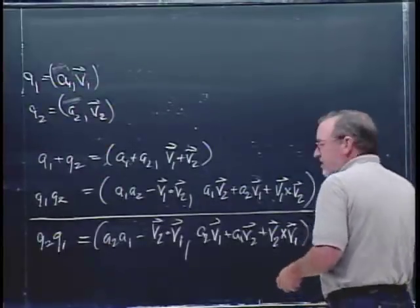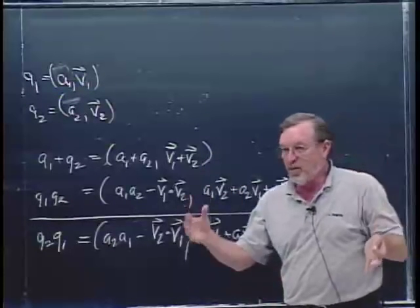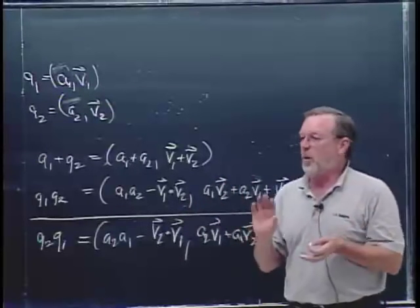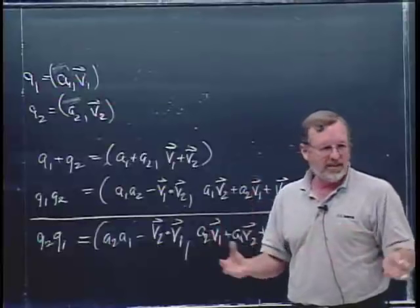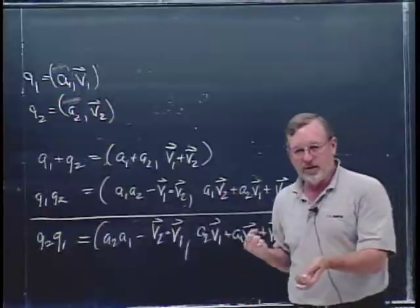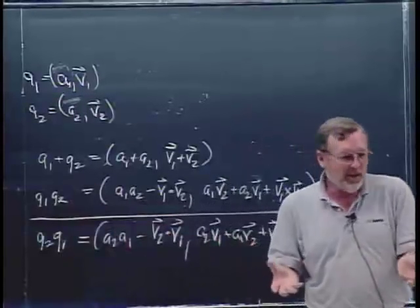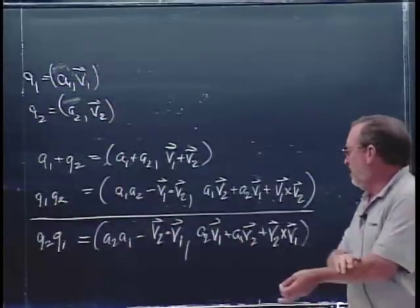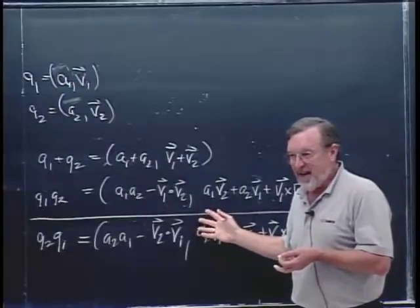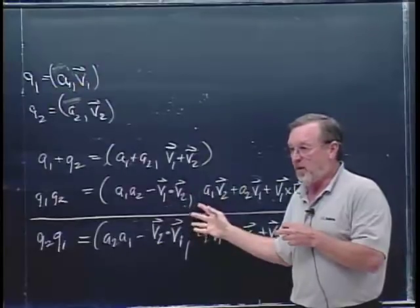Mathematicians love to look at things that look like numbers, act like numbers, do everything else, but one thing's wrong — and then ask what can we say about this? Quaternions pop up as that thing: they have everything you want, but they don't have the commutative property.